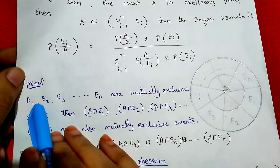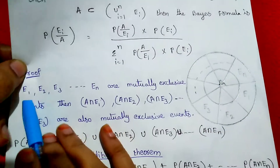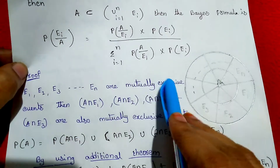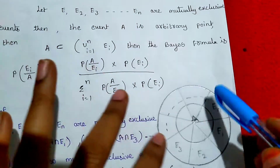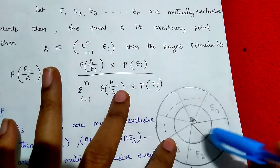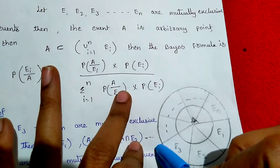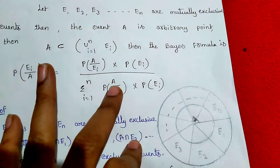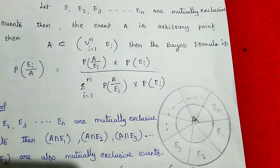Here E1, E2, E3, and so on EN are mutually exclusive events. Let's look at the Venn diagram: this is the E1 area, this is the E2 area, this is the E3 area. E1 through EN are mutually exclusive events, meaning they cannot happen at the same time.